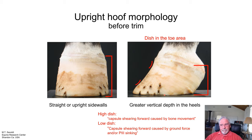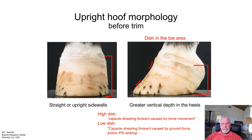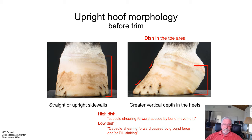I would say that the majority of causes of this dish in the toe is that the P3 bone is lowering in its elevation within the hoof capsule, becoming more positive palmar angle.